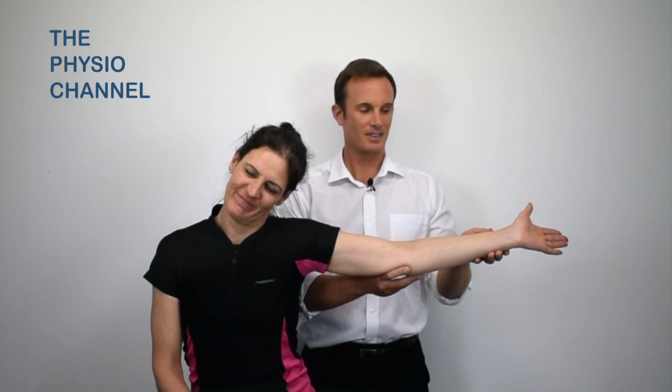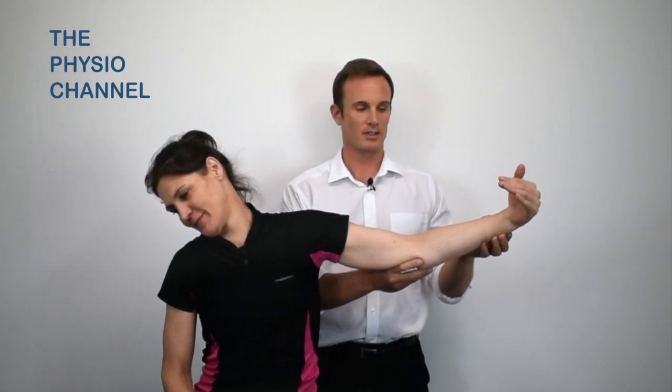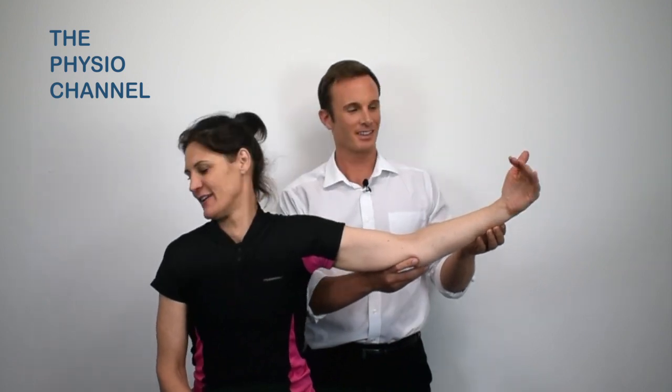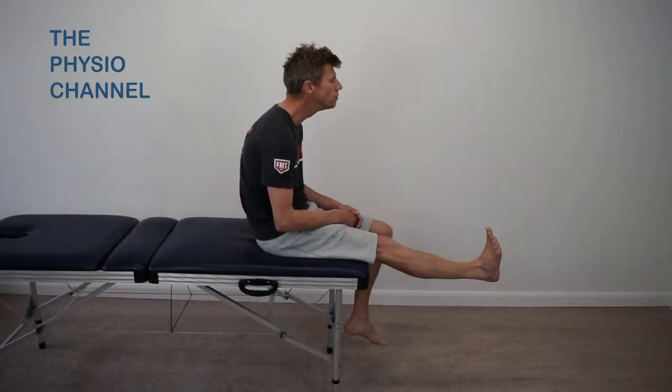Here's an example of a median nerve glide and a sciatic nerve glide. Sometimes these techniques are also called nerve flossing.